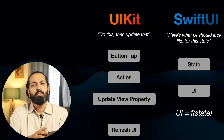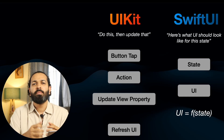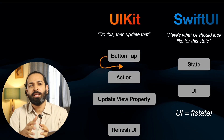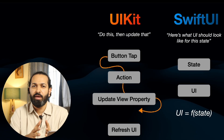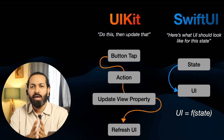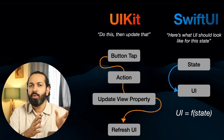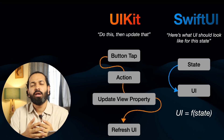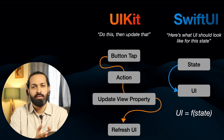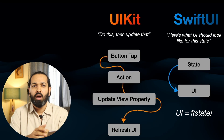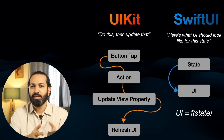When SwiftUI came out, it changed the way we think about UIs. Instead of saying do this, then update that, then pass this information somewhere and then update the UI, we started saying: here's how my UI should look for this state. Everything started working around states. Because that's the thought process of declarative UI — our UI is the function of the state. When the state changes, UI changes. Simple.